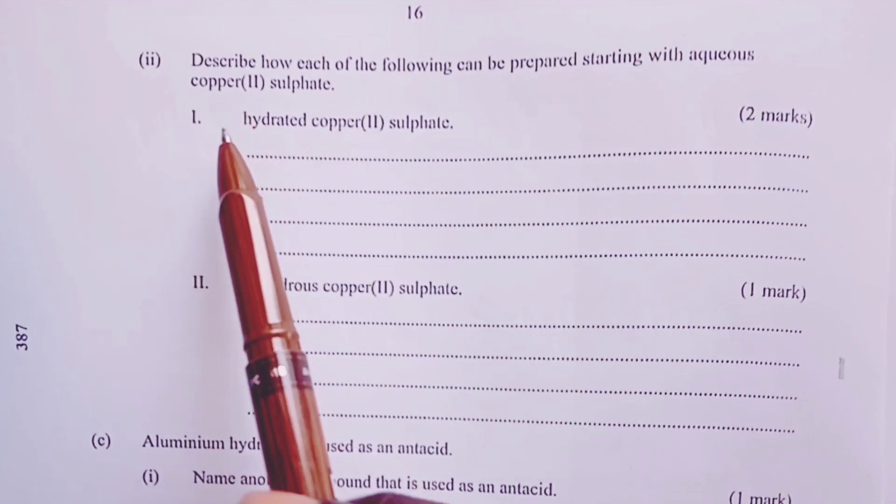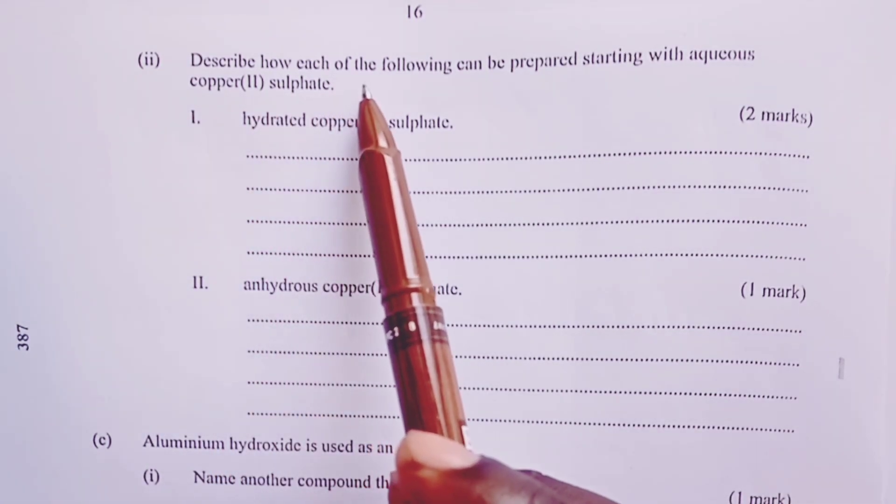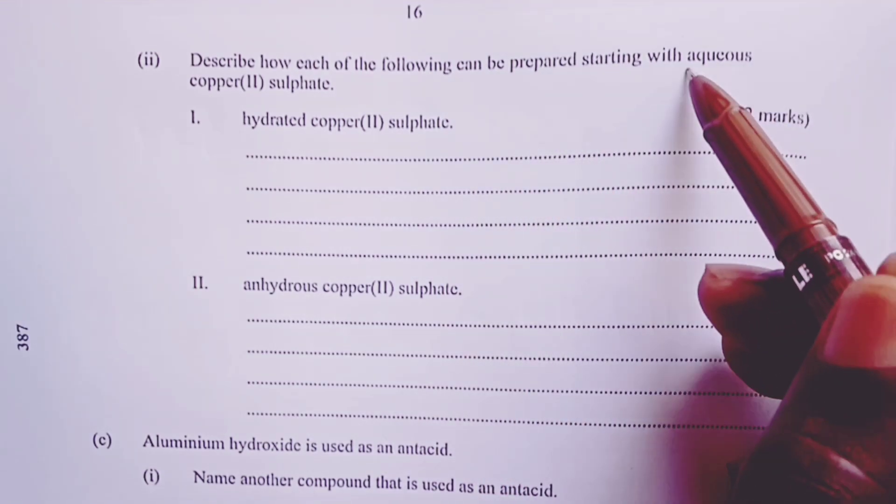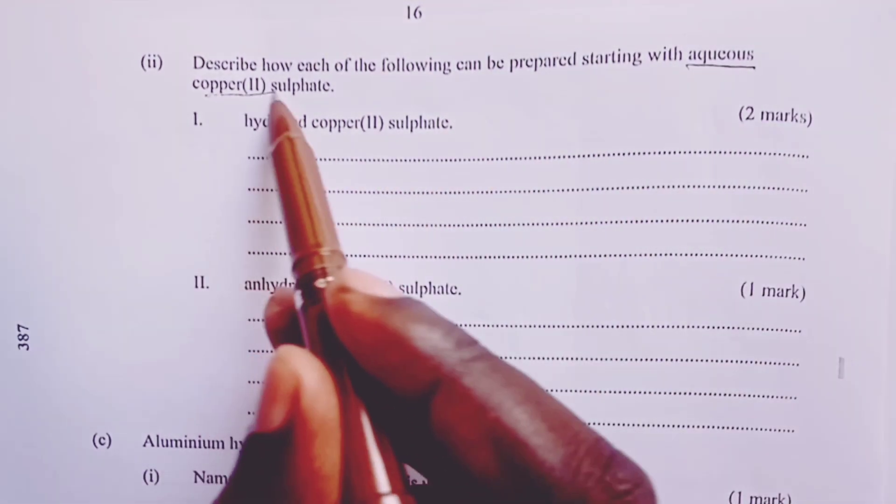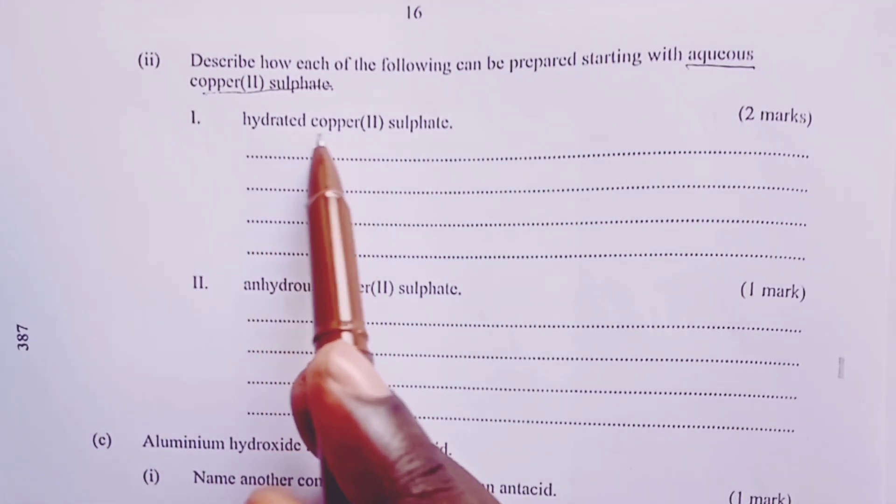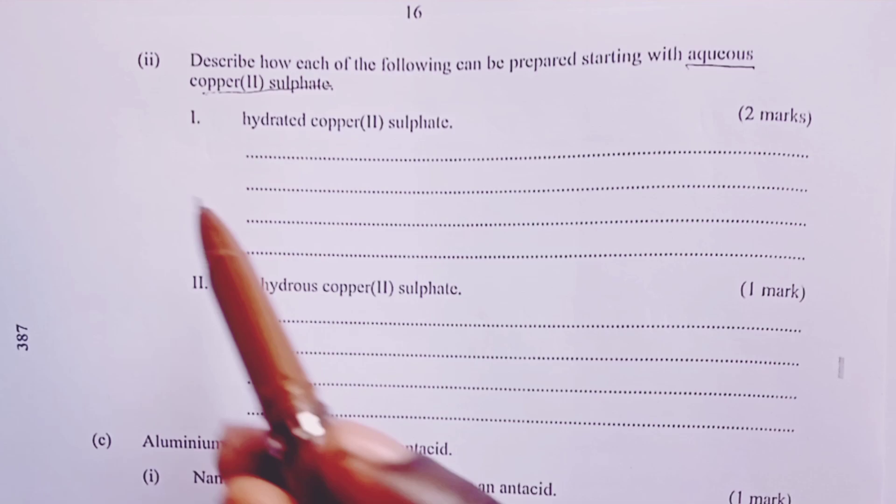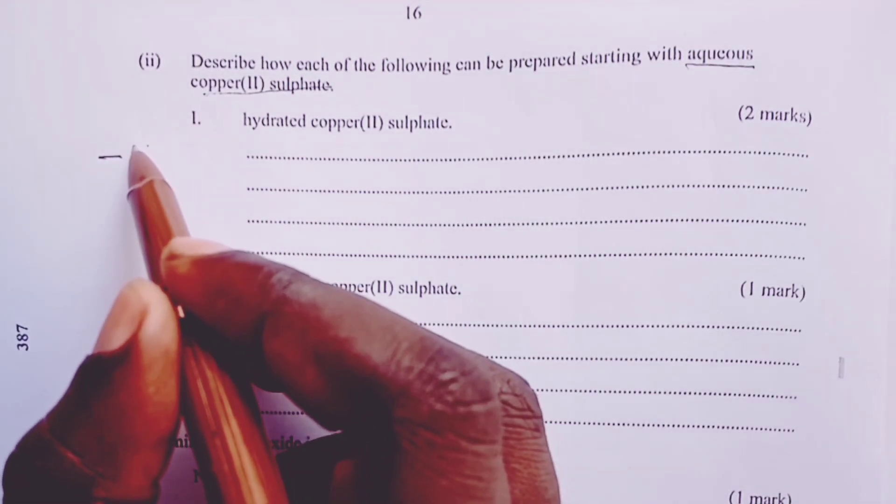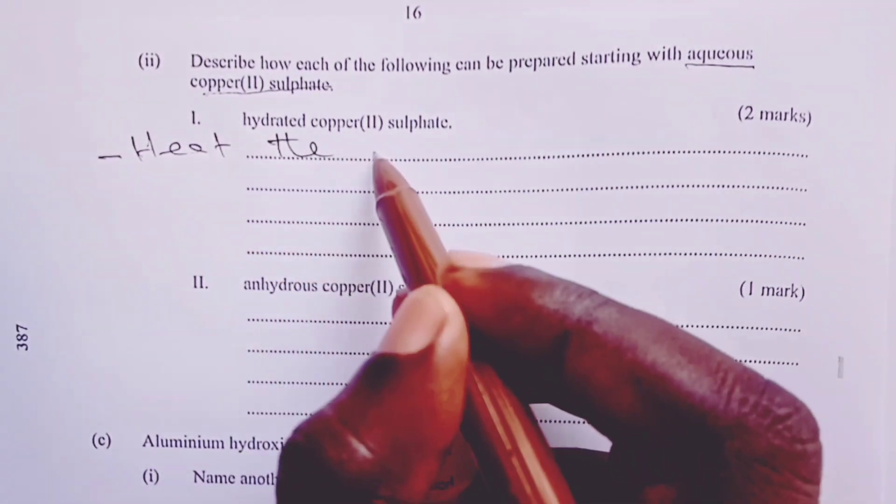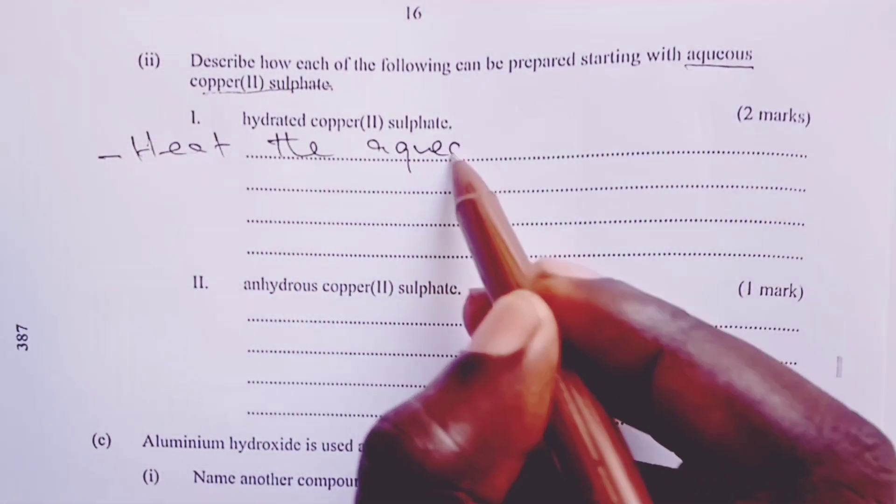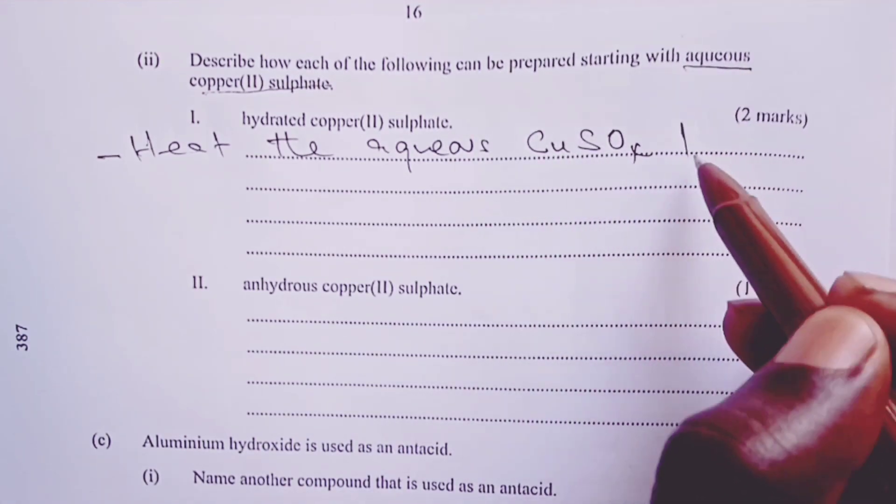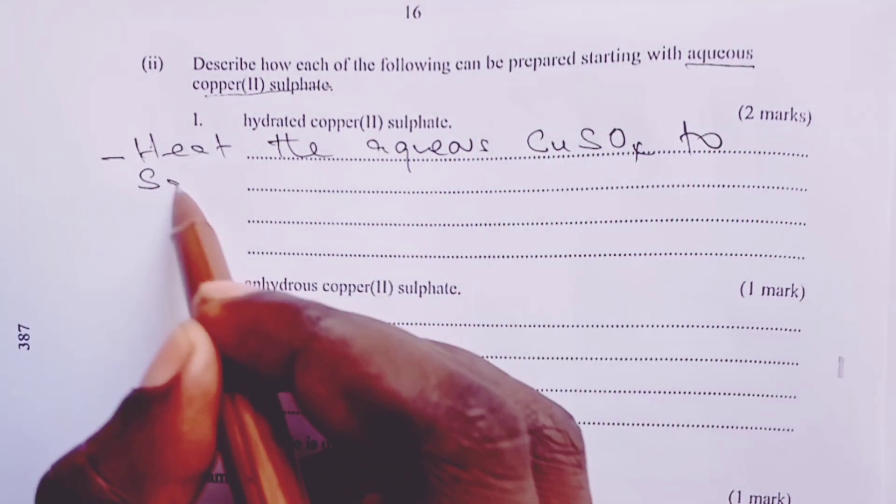We are being asked to describe how each of the following can be prepared, starting with the aqueous copper(II) sulfate. We begin with the hydrated copper(II) sulfate. So here, we shall heat the aqueous copper(II) sulfate to saturation point.